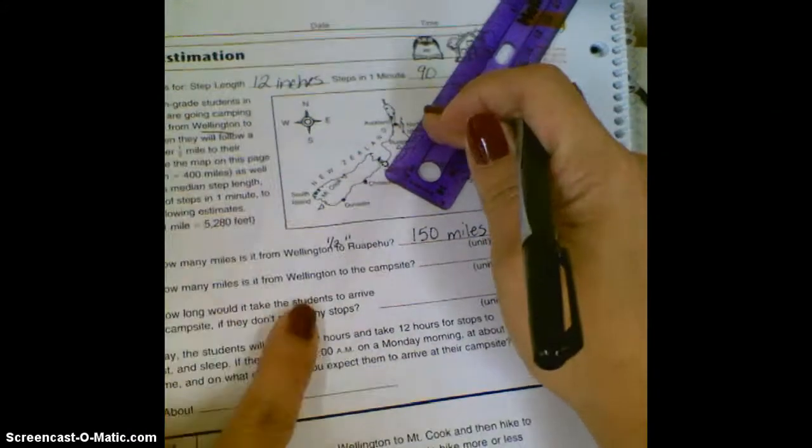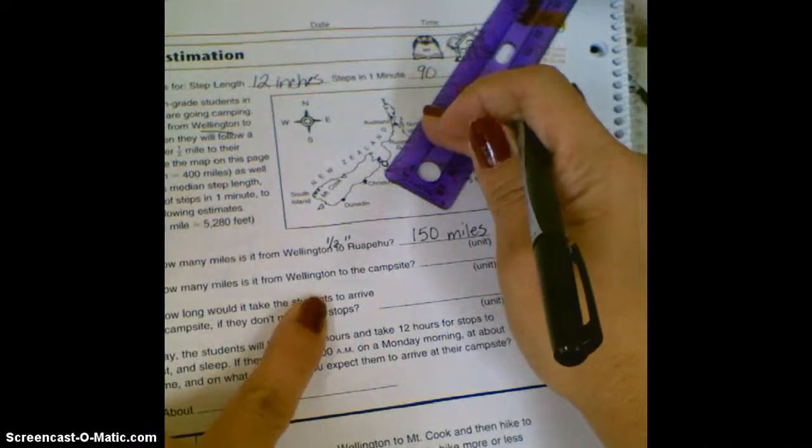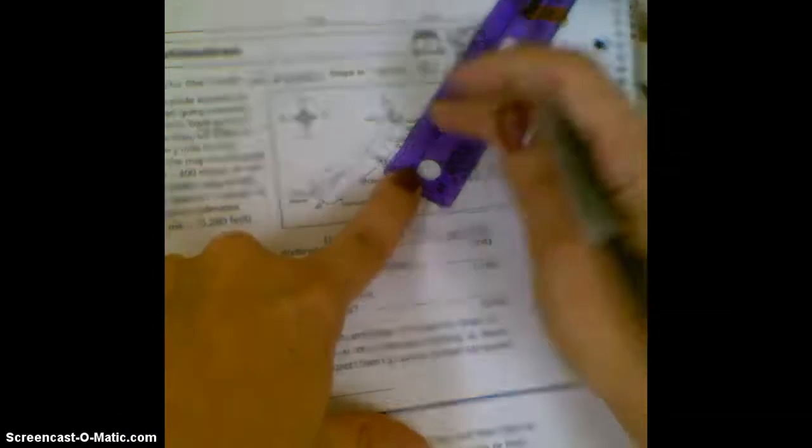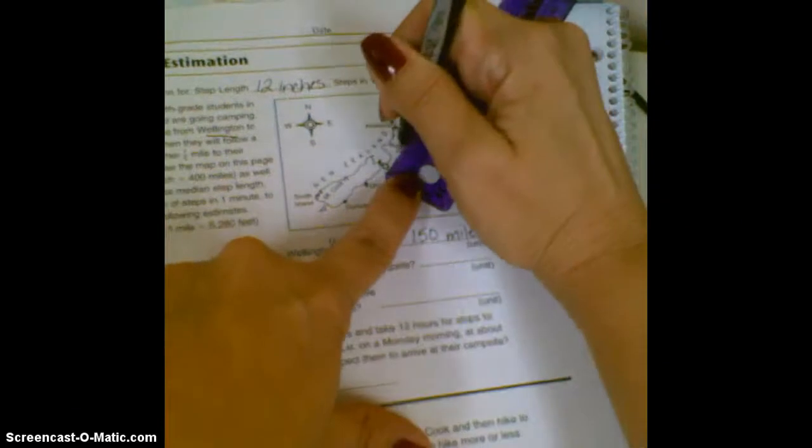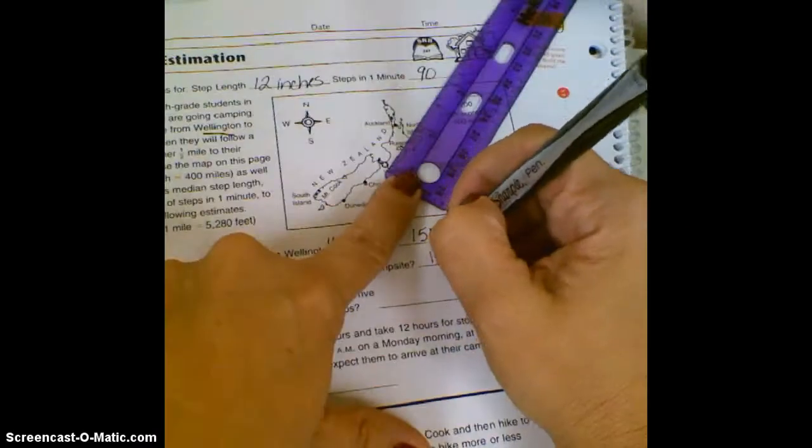And now it says about how many miles is it from Wellington to the campsite? Well if you remember, we are going to go an extra half mile, so again we'll do a rough estimate and we'll make it 151 miles.